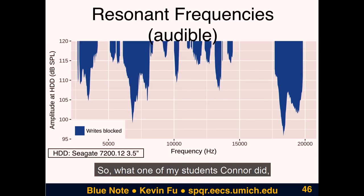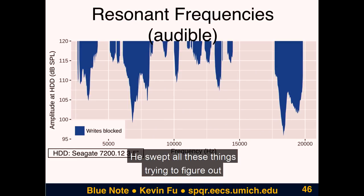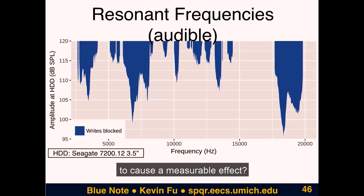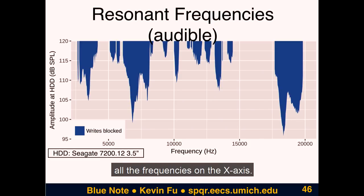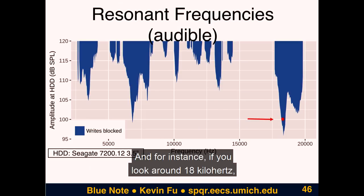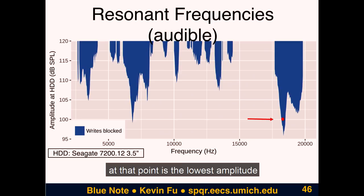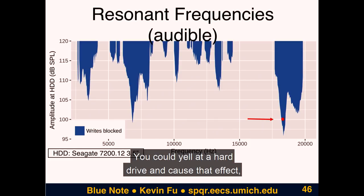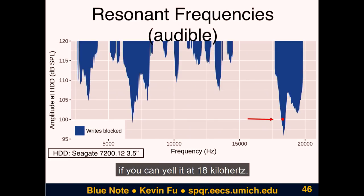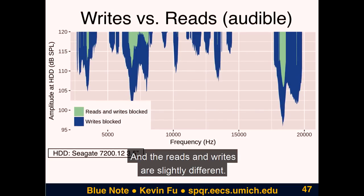One of my students, Connor, swept all these things trying to figure out what frequency requires the least amplitude to cause a measurable effect. Looking around 18 kilohertz — that little red dot — that's the lowest amplitude where we can get a measurable effect on the hard drive at 100 decibels. That's like yelling. You could yell at a hard drive and cause that effect if you can yell at 18 kilohertz.